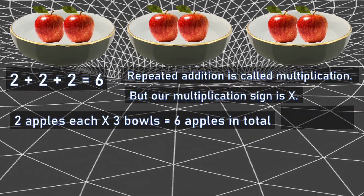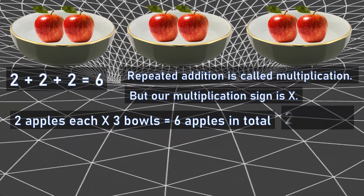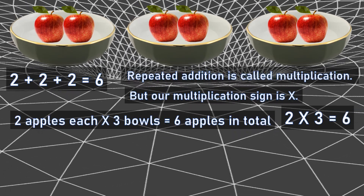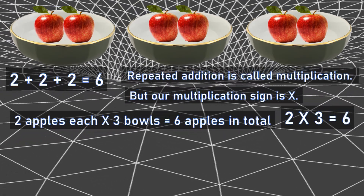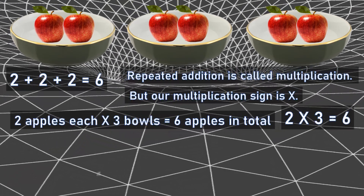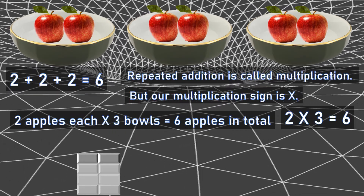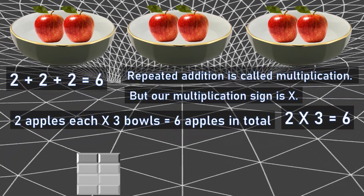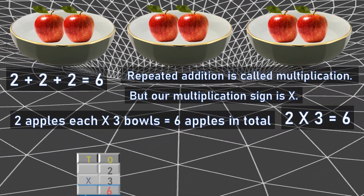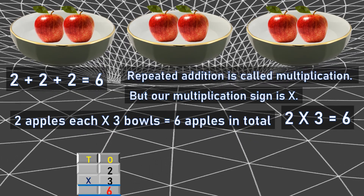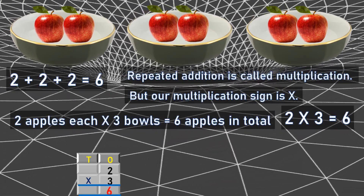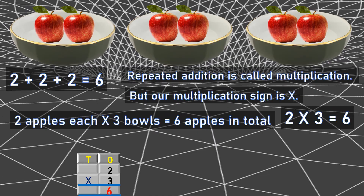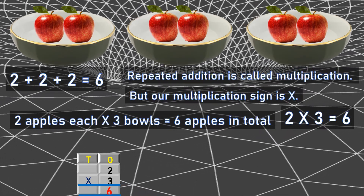Is it correct? Let's see the calculations. Two threes are six. Is it correct? So now this is how we will calculate. With the TO concept, this is two into three equals to six.